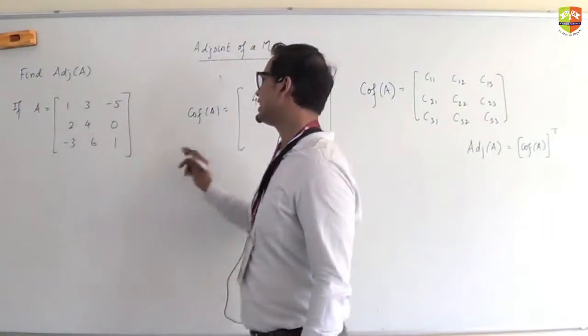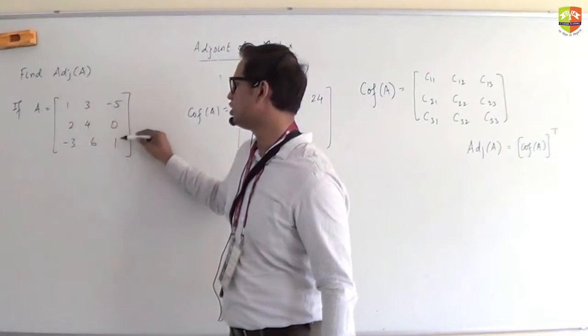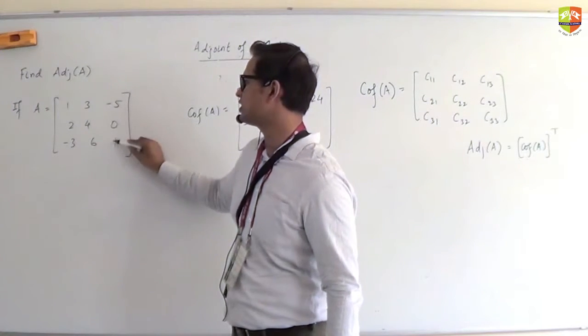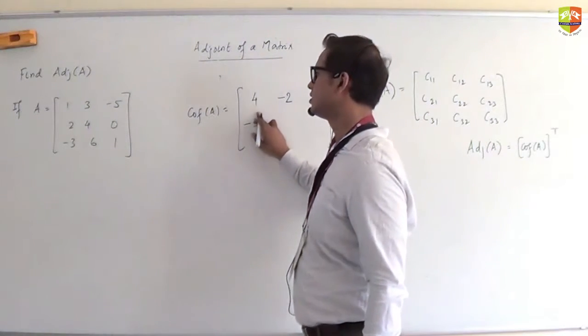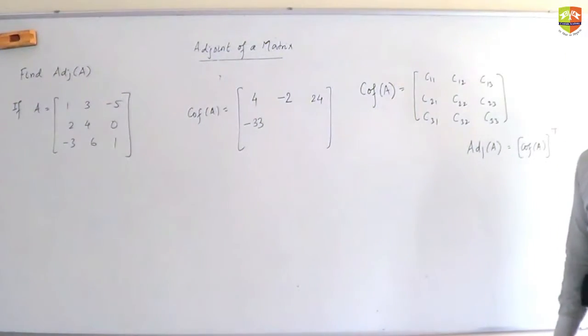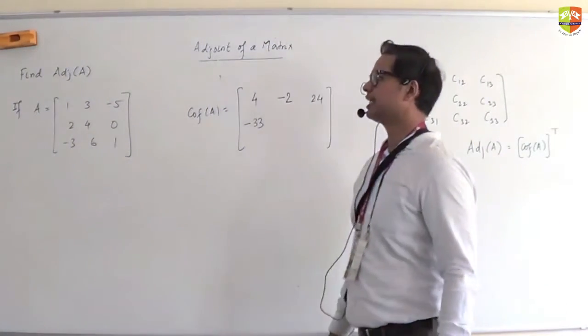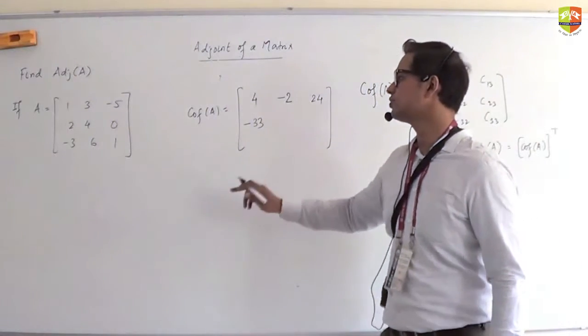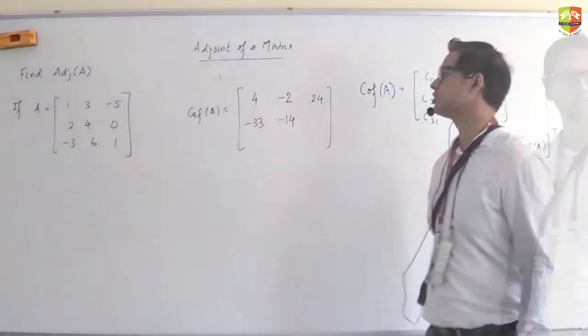Next, for 4, 4 comes in second row, second column, so sign will be positive. Hide this, hide this. So it will be 1 minus -30, which is 1 plus 30, that's 31. Wait - let me recalculate. 3 into 1 is 3, 6 into -5 is -30, so 3 minus -30 is 33. But the sign is negative for position (2,2). No wait, (2,2) is positive. So it's 1 minus -30... Let me redo this: for element 4 at position (2,2), the minor is 1 times 1 minus -5 times -3, which is 1 minus 15, equals -14. Sign is positive, so cofactor is -14.